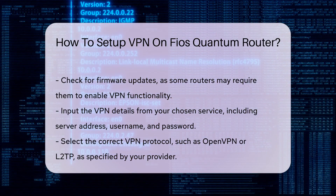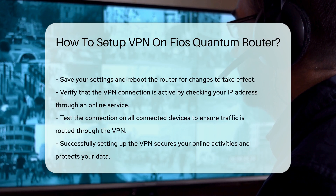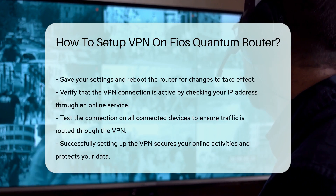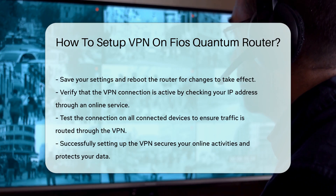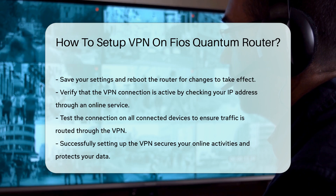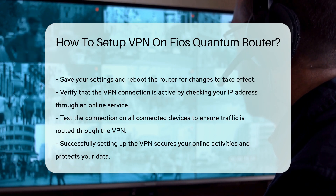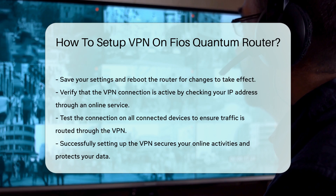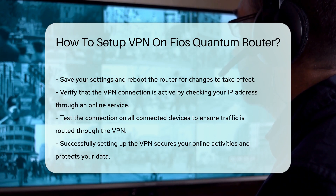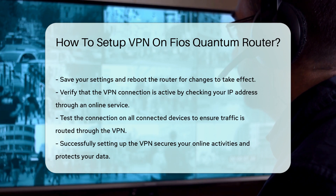You can do this by checking your IP address through an online service. Finally, test the connection on your devices. Ensure all connected devices are routing traffic through the VPN. This setup secures your online activities, protecting your data from prying eyes. By following these steps, you can effectively set up a VPN on your Fios Quantum Router, enhancing your overall internet security.